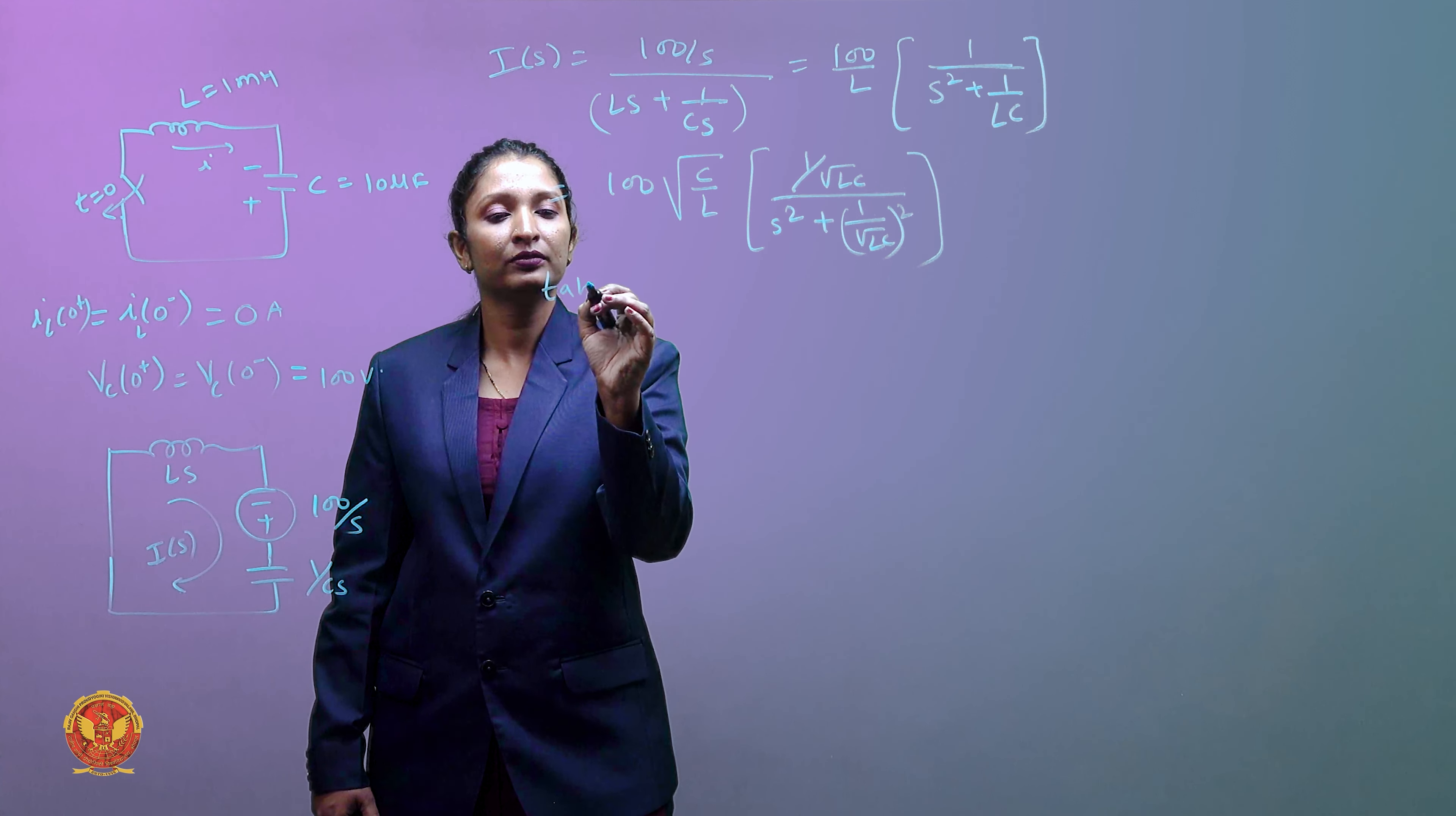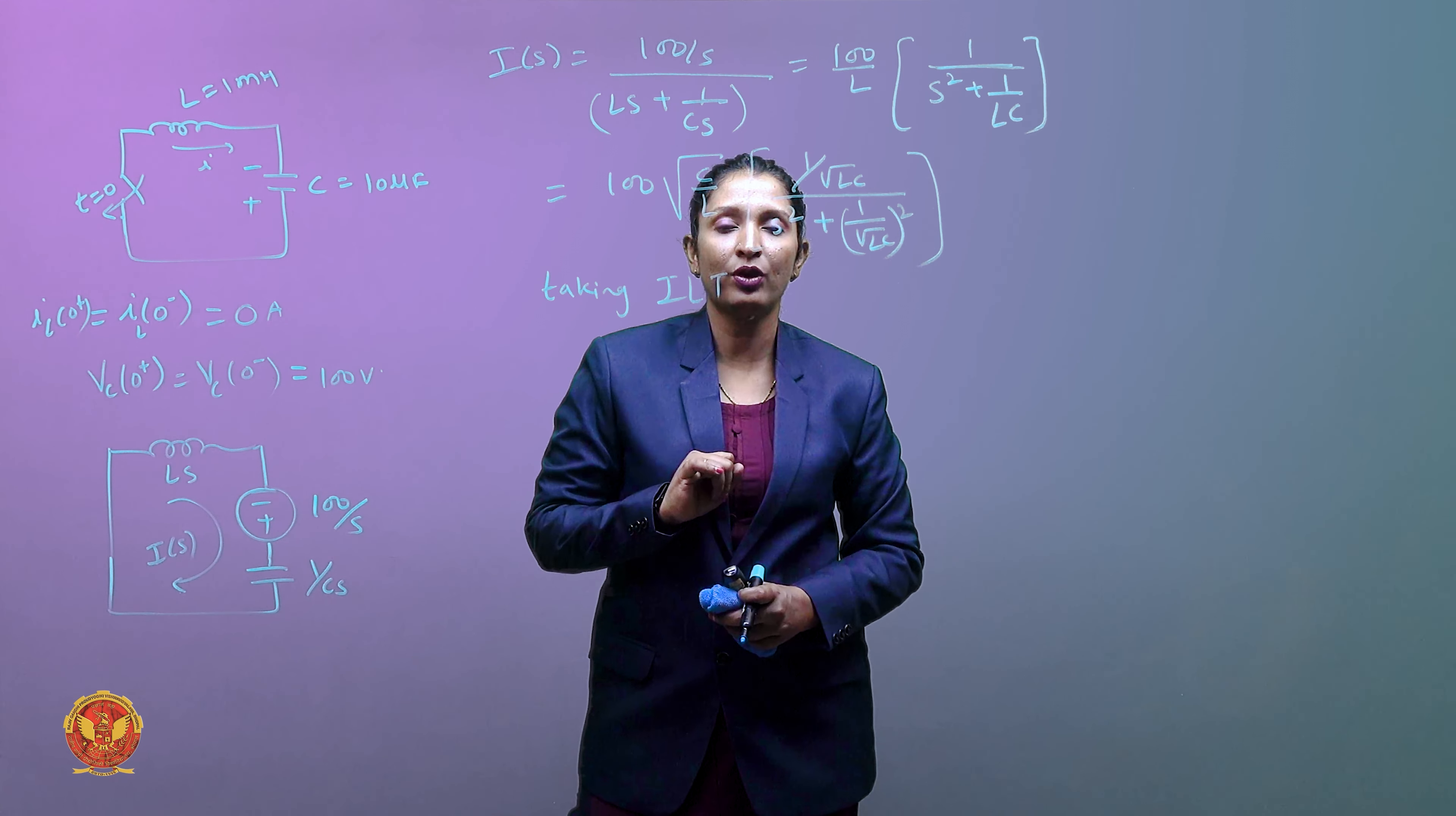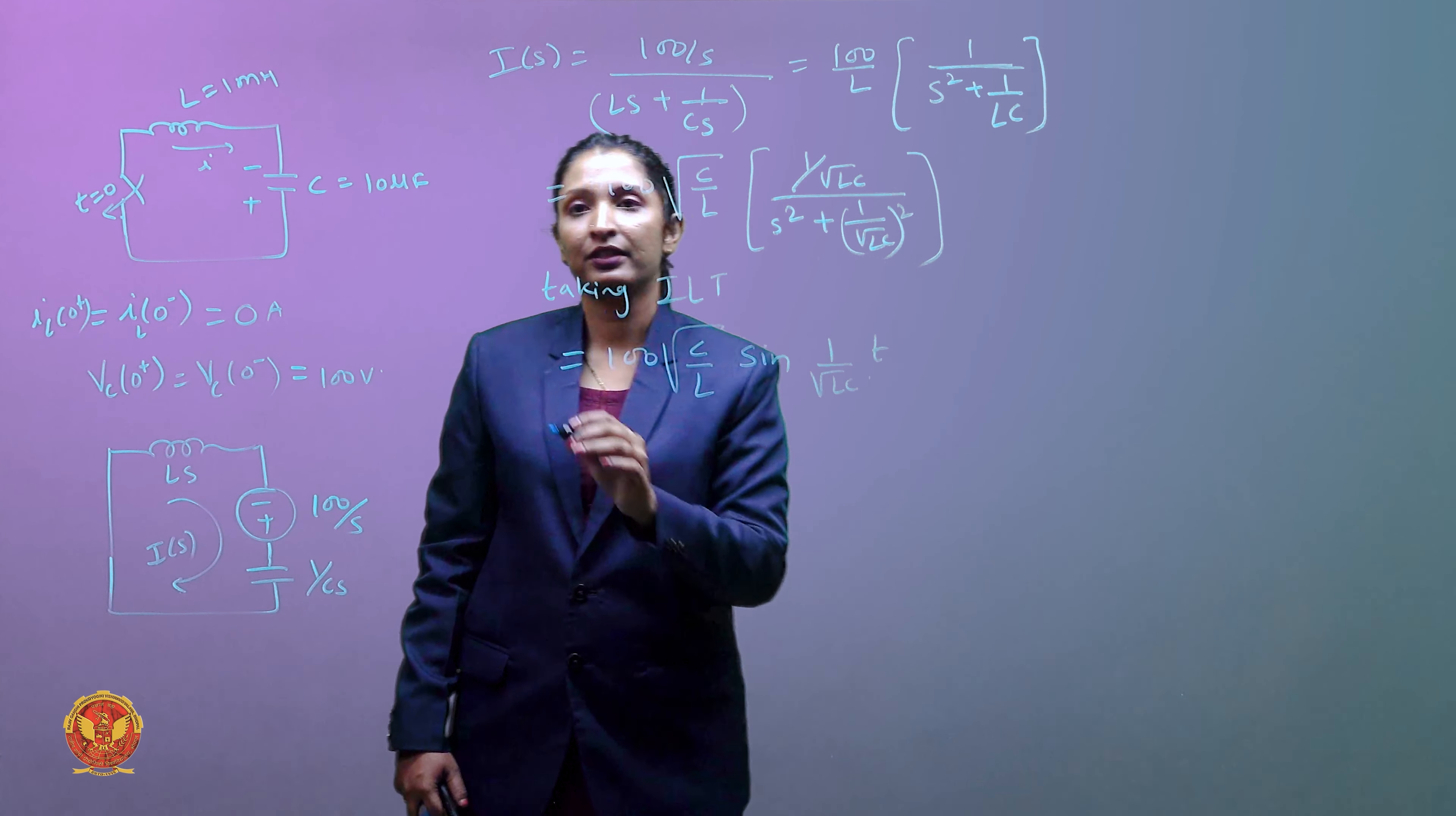Here I have to take inverse Laplace. Taking inverse Laplace transform, now I have seen this term, so what is the inverse? I can say omega divided by s square plus omega square which is the Laplace transform - this is the Laplace transform of the sine function. So I can write it in this way: it is equal to 100 under root C by L sine of omega, 1 upon under root LC into t.